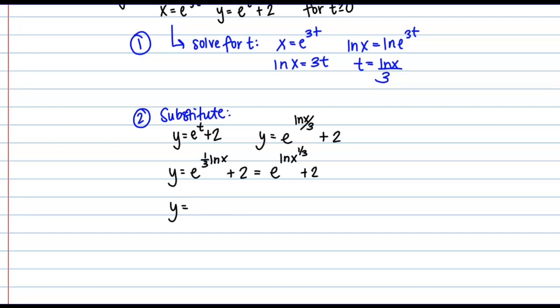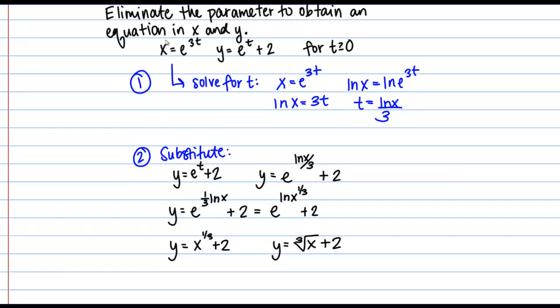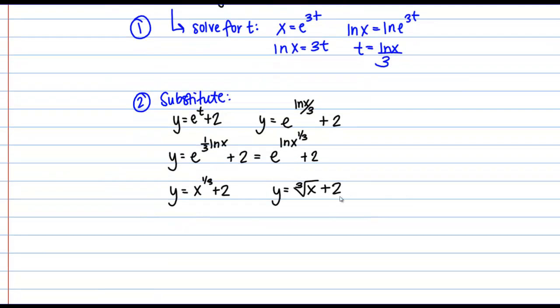And I'm just left with x to the 1 3rd plus 2, or I could write that as the cubed root of x plus 2. So you can see that we've eliminated the parameter. Instead of having x and y both expressed in terms of the parameter t, I just have this relationship between x and y.